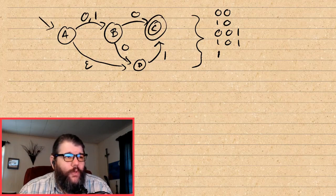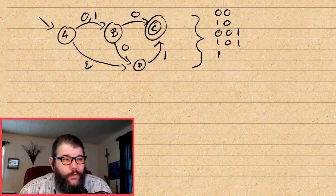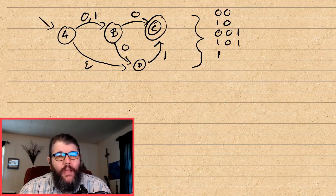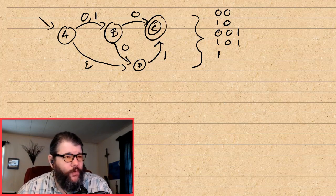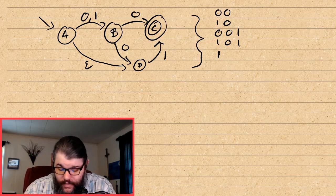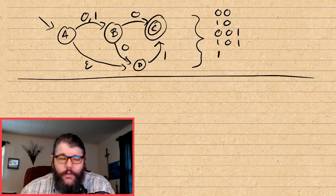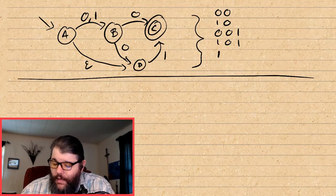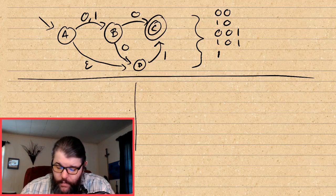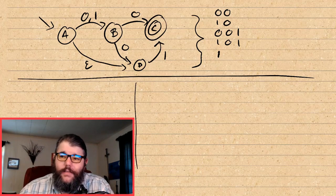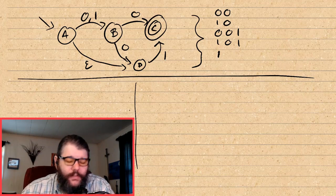Those are the three new things that NFAs add to DFAs. What I'm here to show you is that NFAs are not actually more powerful than DFAs. The way I'm going to show that is using the subset construction. You could turn this into a full proof that all NFAs are equivalent to DFAs, but today I'm just going to show you how to do it and give you some practice.